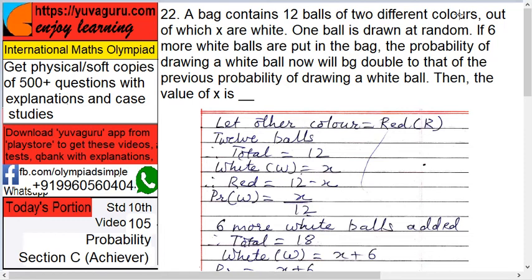A bag contains 12 balls of two different colors, out of which x are white. One ball is drawn at random. If six more white balls are put in the bag,